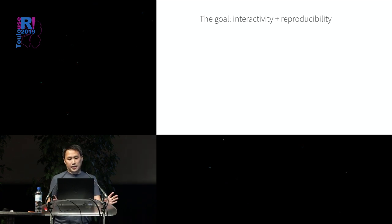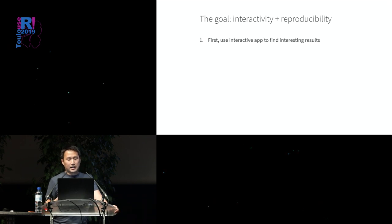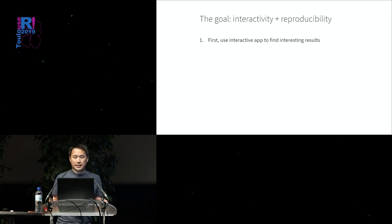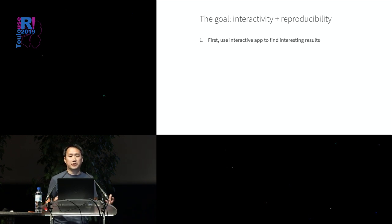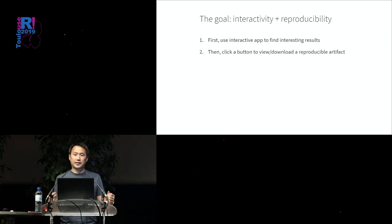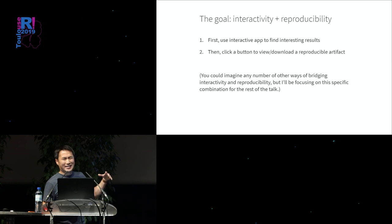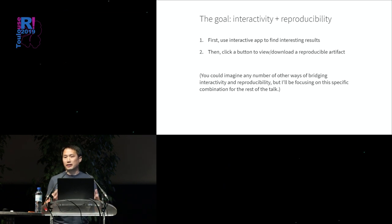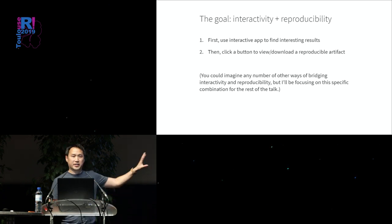So the goal today is: how can we bring these two things together? How can we bridge the gap between interactivity and reproducibility? The particular approach we'll take is: first, a user uses the interactive app until they find interesting results — no different from how you use Shiny today. But then, as a second step, offer them a button or UI gesture to view or download a reproducible artifact from the choices they've made. There are many ways to imagine this coming together, and I'd love to hear other takes.